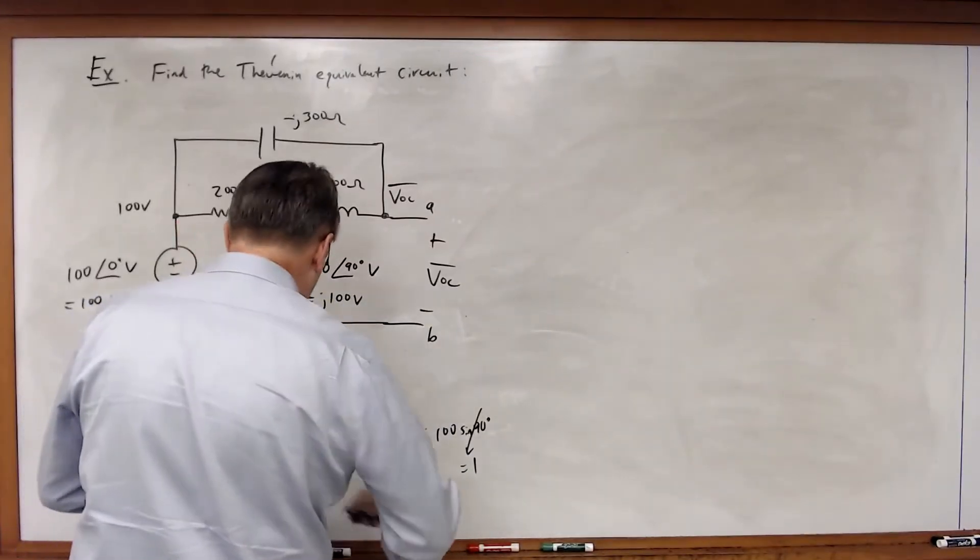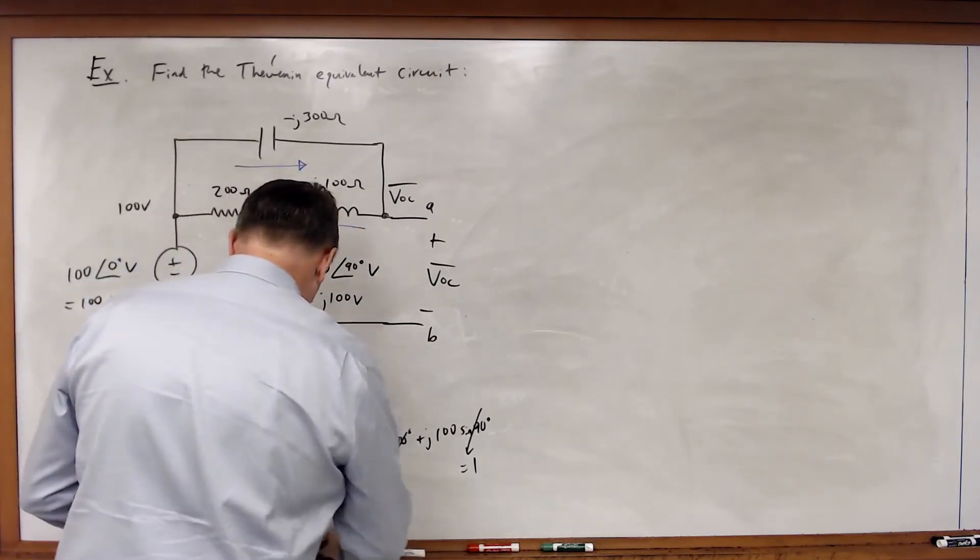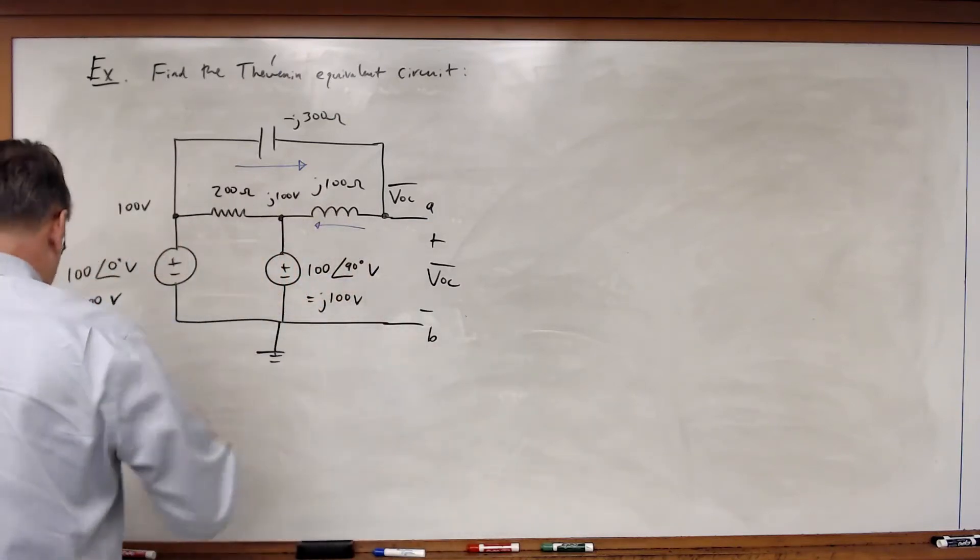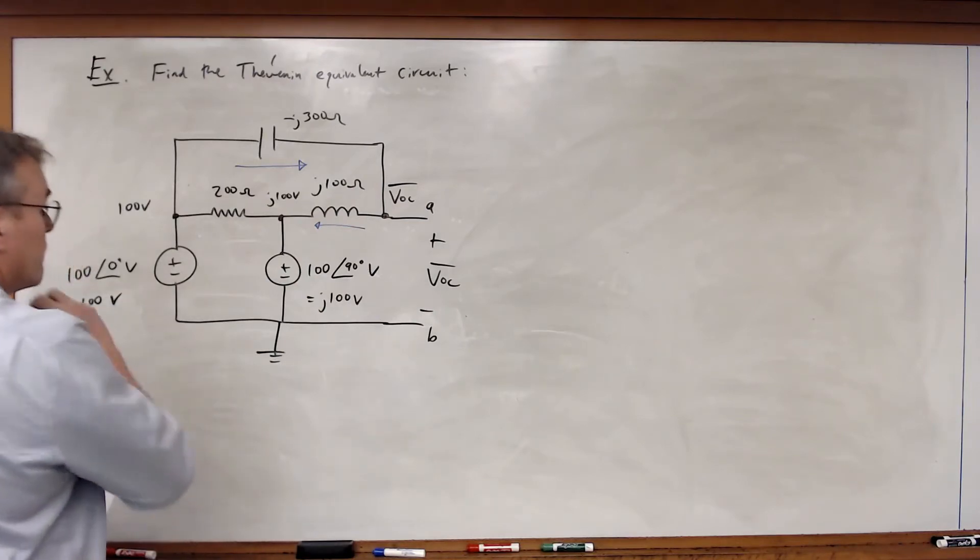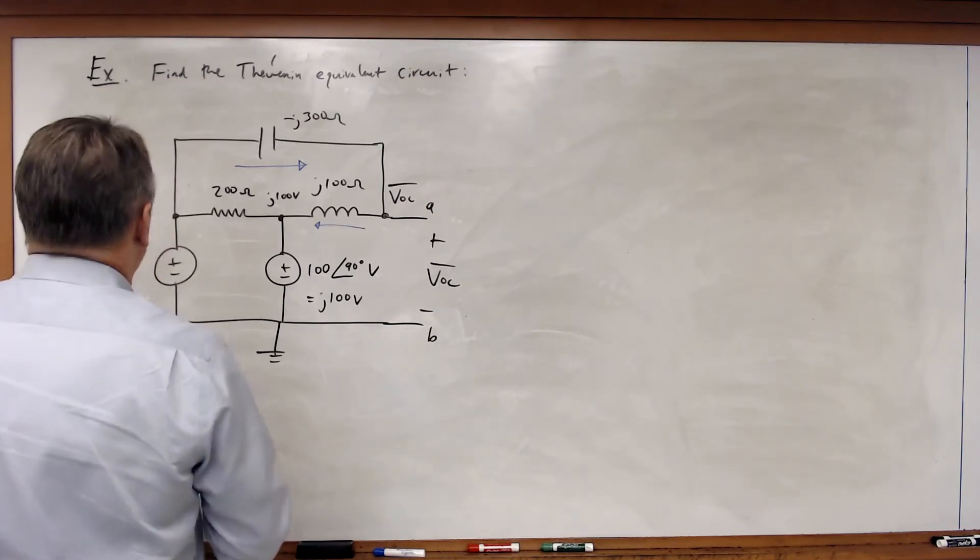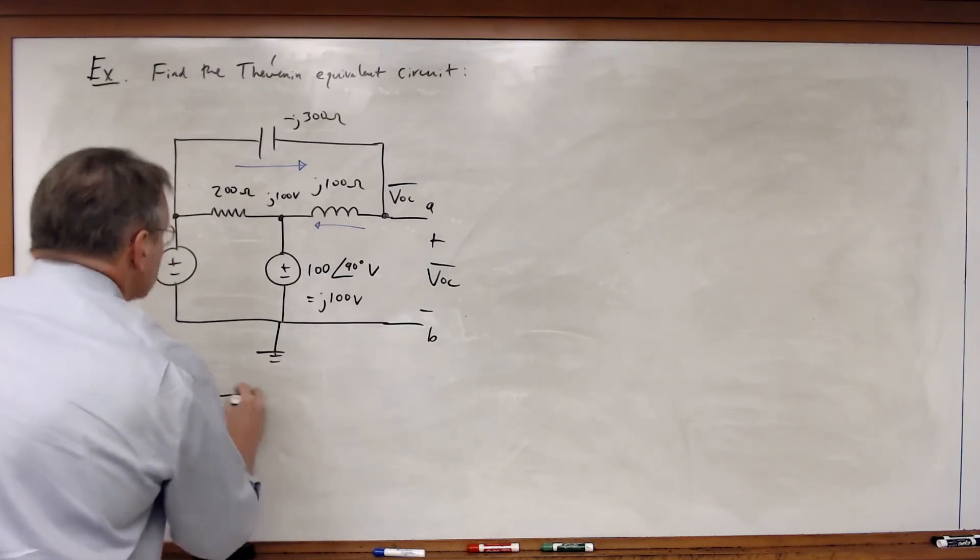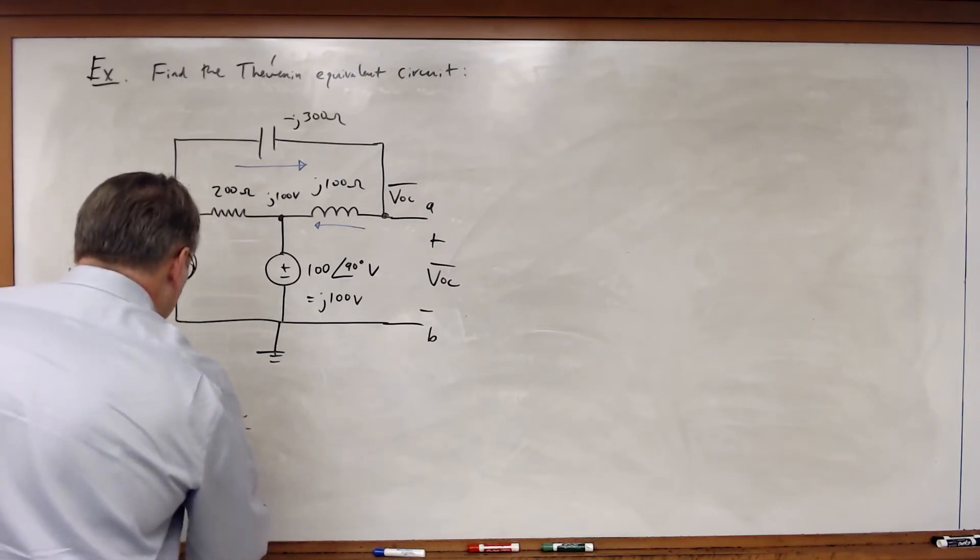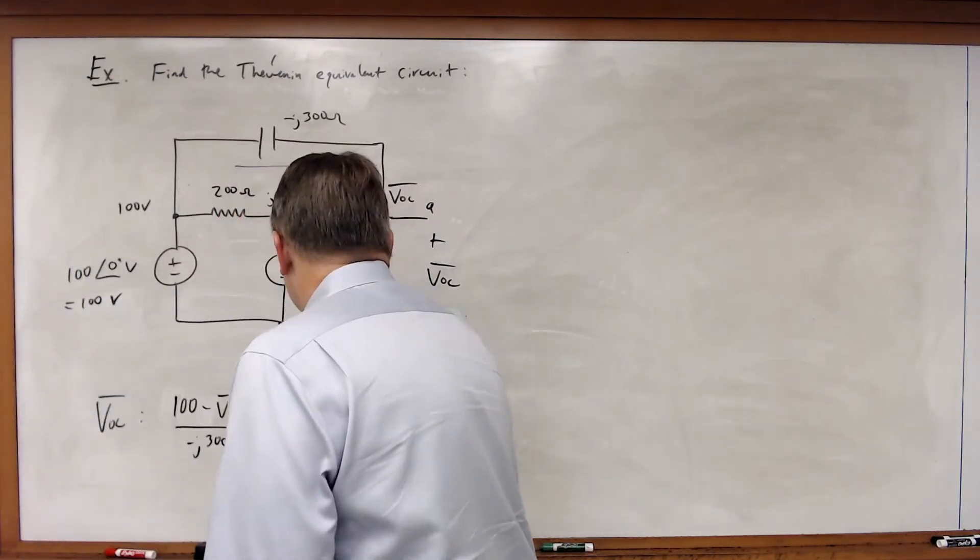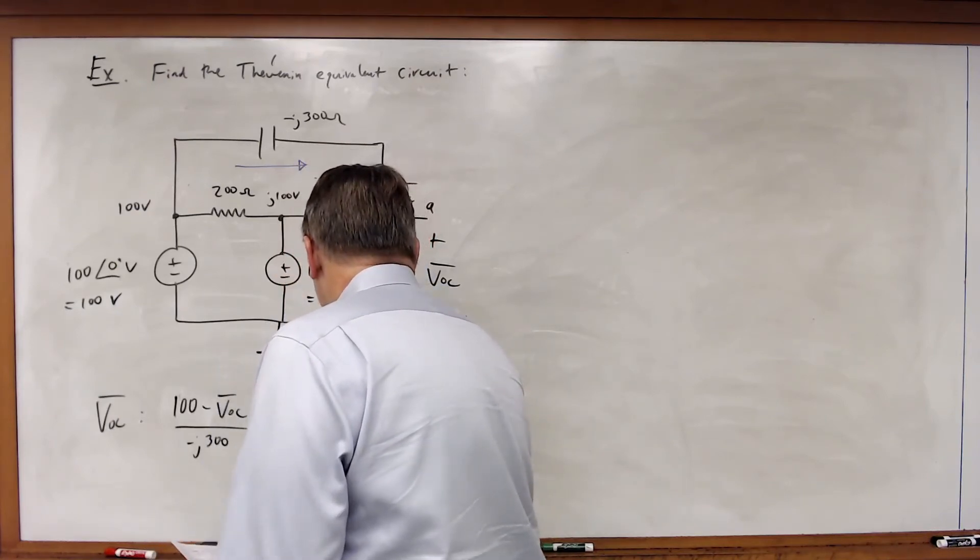To find VOC, I'll pick current directions here and here. What I've got is: (100 - VOC) / (-j300) must equal (VOC - j100) / j100.